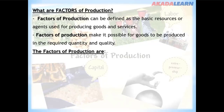The factors of production are land, labor, capital, and entrepreneurship. We shall now look at each of these factors of production one by one.